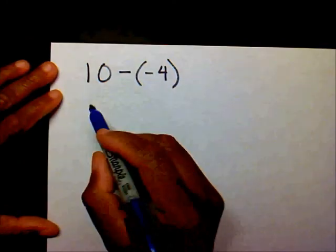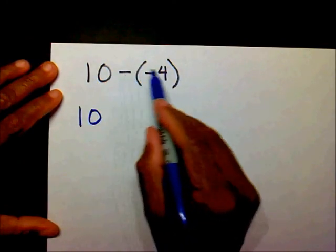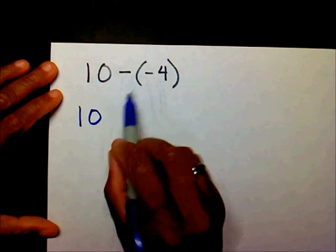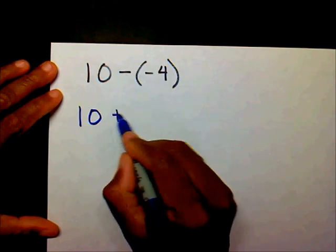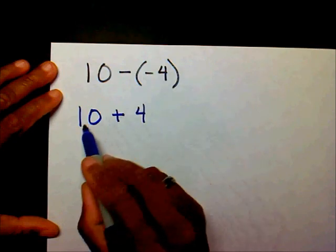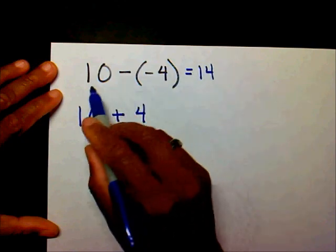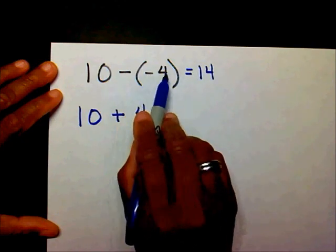Here's another problem. Bring down your 10. Add the opposite. The opposite of negative 4 is positive 4. So 10 plus 4 is 14. So therefore, 10 plus negative 4 is 14.